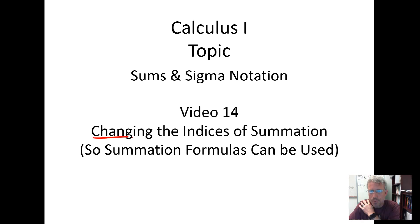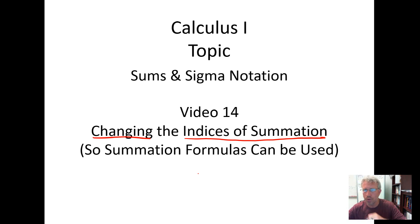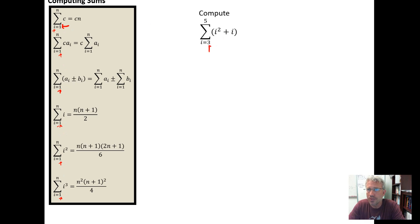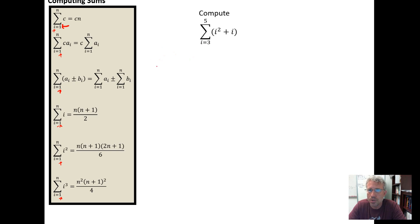In this video we want to look at an example of changing the indices of summation so that we can apply summation formulas. The issue is that our summation formulas all depend on I starting at one — that is, the index of summation starting at a lower index of one. So the question is: if our lower index doesn't start at one, what can we do to modify the indices so that we can apply the summation formulas?